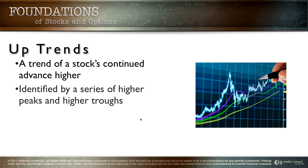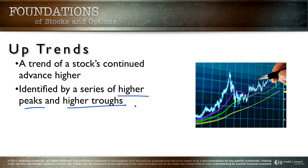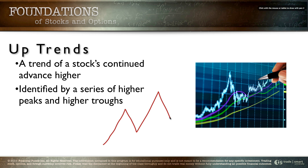In an uptrend, the trend of a stock is continuing a higher advance, and the way we identify this is by a series of higher peaks and higher troughs. In other words, we're going higher high, higher low, higher high, higher low, higher high. Those are peaks and those are troughs. Anytime we can identify a series of higher highs and higher lows, we've got some sort of an uptrend taking place.